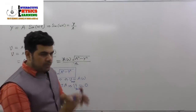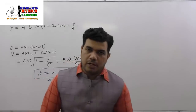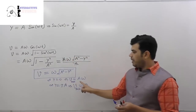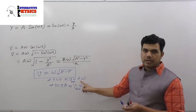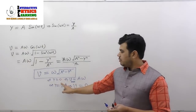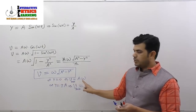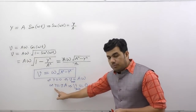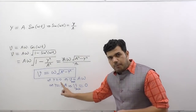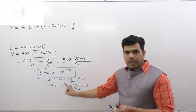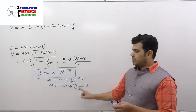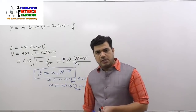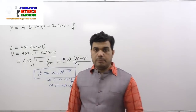At the mean position, y = 0, velocity is maximum. At either extreme position — whether positive or negative — velocity is minimum, and that velocity is zero.